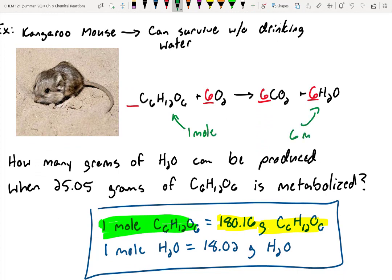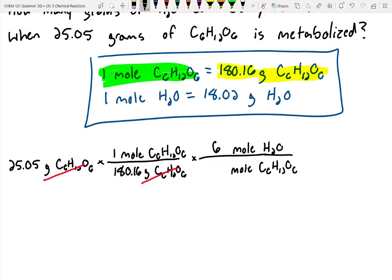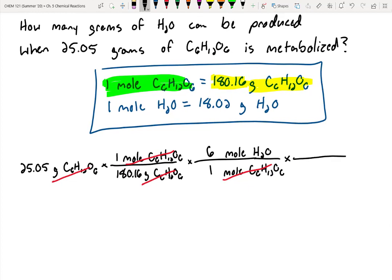Again, I want to cancel out moles of glucose, and we want to start working with water. But it's going to be a ratio, meaning we have to keep the same unit, so I'm going to do moles on top too. We said we get six moles of water out for every one mole we put in. So now we can cancel out moles of glucose and we're left with moles of water. But we don't want moles of water, we want grams of water. So let's cancel out moles of water.